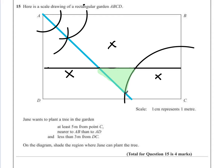We've met all of our rules. This shaded area is outside the 5 metre barrier from C, it is inside 3 metres from DC and it is closer to AB than AD.